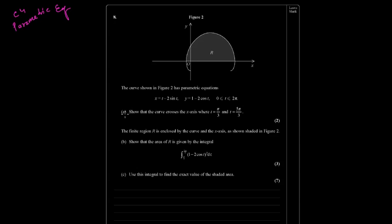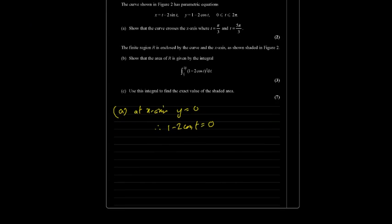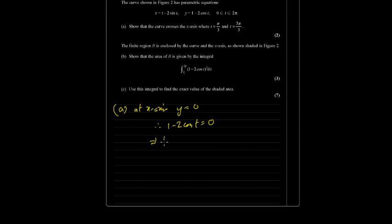In question number a, we have to show that the curve crosses the x-axis. X-axis means Cartesian and t is the parametric parameter. X-axis means at x-axis y equals 0. Therefore, y is 1 minus 2 cos t equals 0. So that means 1 equals 2 cos t and cos t equals half. Now, in order to solve this, let me review this a little bit.